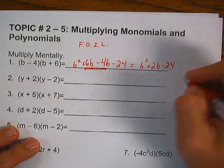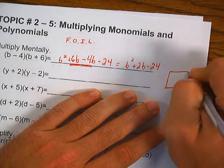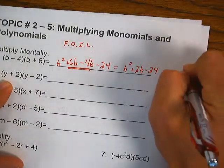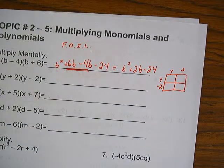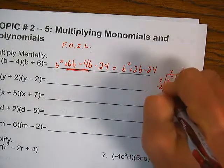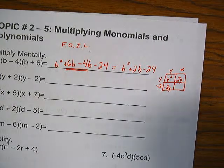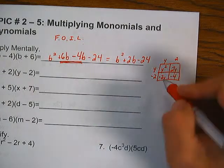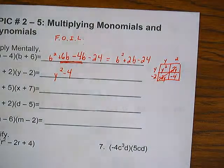Number 2, I'll use the box. It's a binomial, so I have a 2 by 2 box. On top: Y and 2. Down the side: Y and negative 2. Y times Y is Y squared; Y times negative 2 is negative 2Y; 2 times Y is 2Y; 2 times negative 2 is negative 4. When we combine like terms, the Y's cancel — that's 0. So what's left is Y squared minus 4.